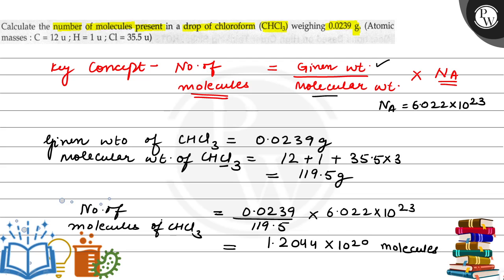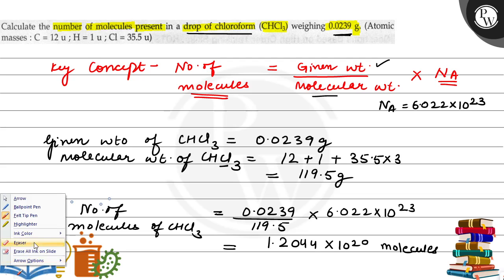That means number of molecules of chloroform present in the drop of chloroform weighing this gram is equals to 1.2044 into 10 to the power 20 molecules.